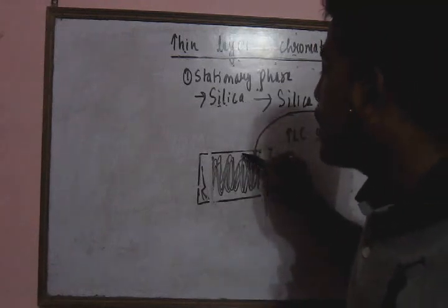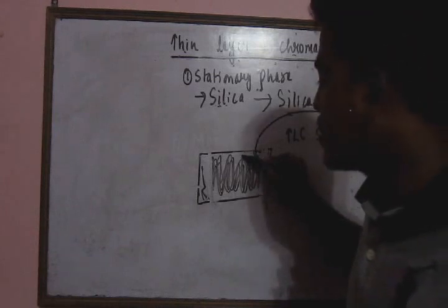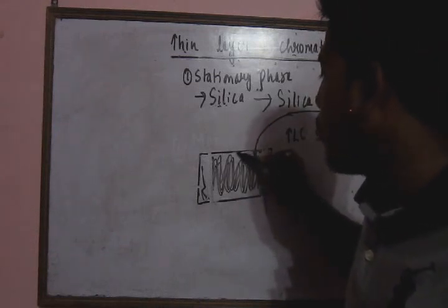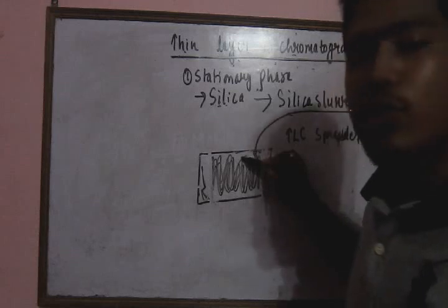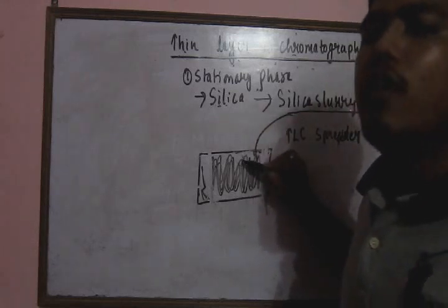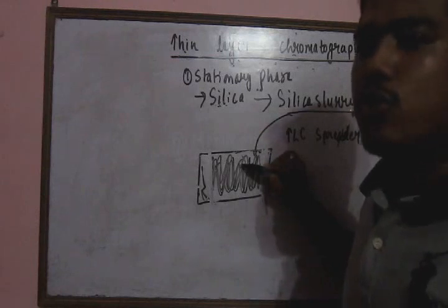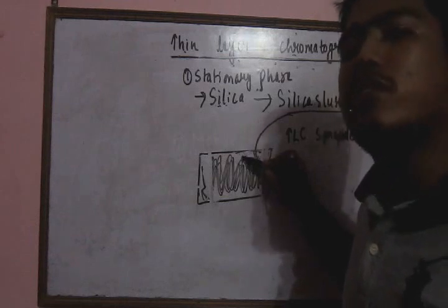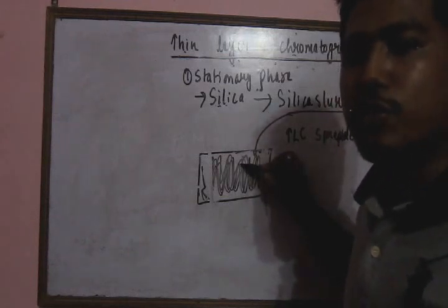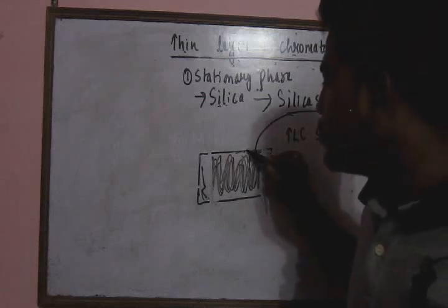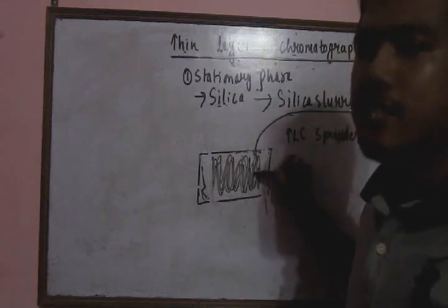While making the silica slurry, the silica has to bind with the support. The support may be a glass plate, plastic plate, or metal plate. The support should not react with the compound being separated — glass is mainly inert, so we use the glass plate for TLC.